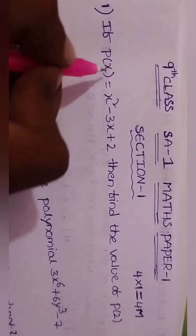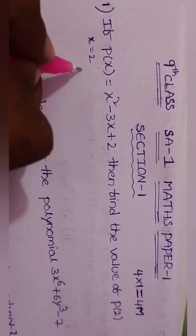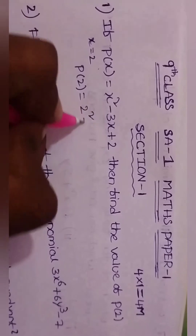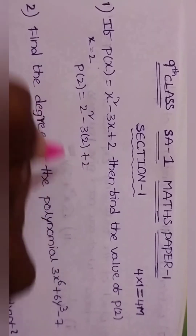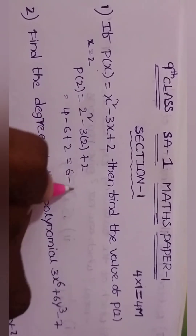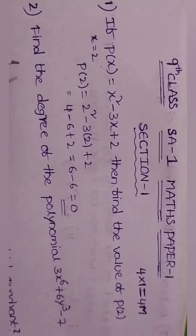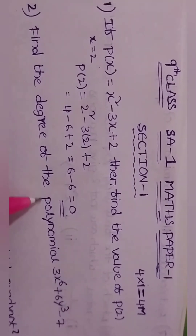Substituting x equals 2: p of 2 equals 2 squared minus 3 into 2 plus 2, which gives 4 minus 6 plus 2, equals 0.